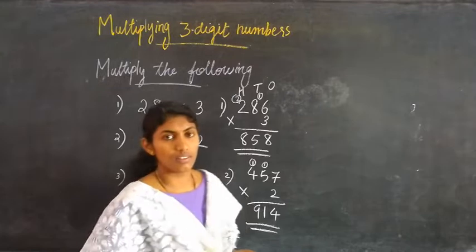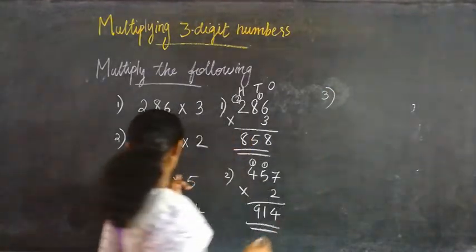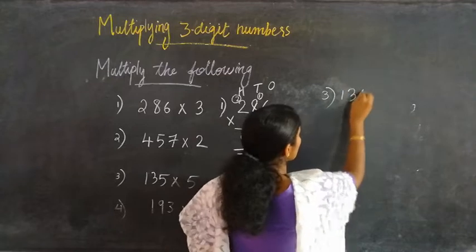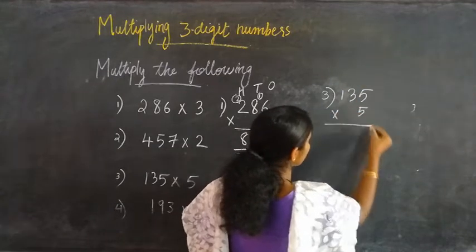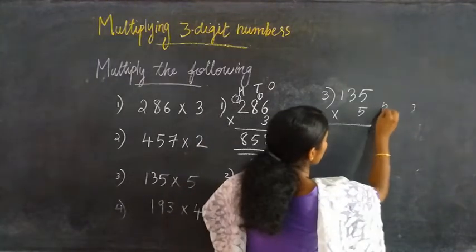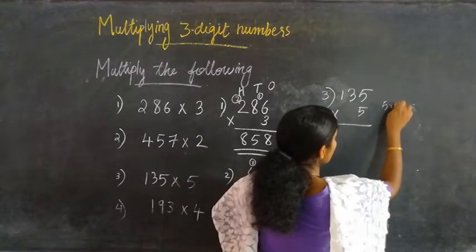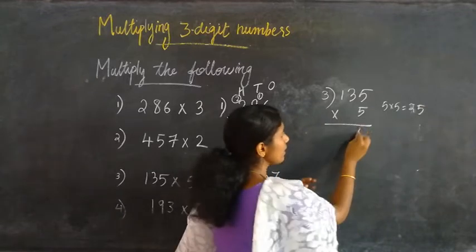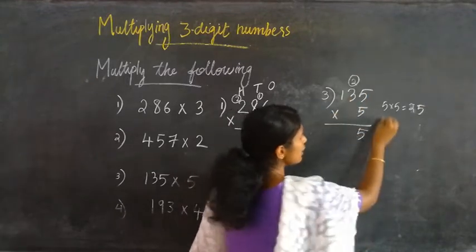Moving to the third question: 135 into 5. First, 5 into 5 equal to 25. Writing 5 here and 2 is carried over. Then 3 into 5.